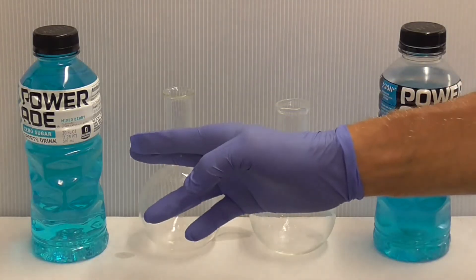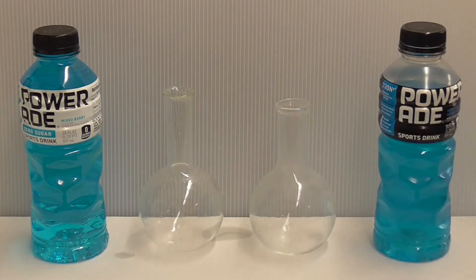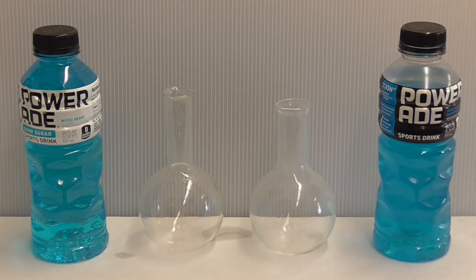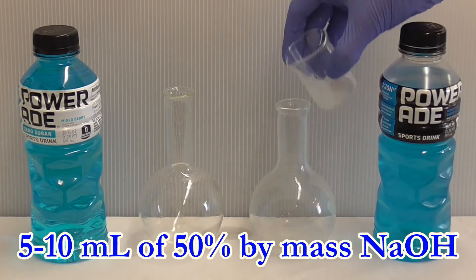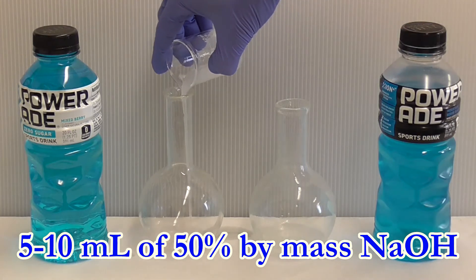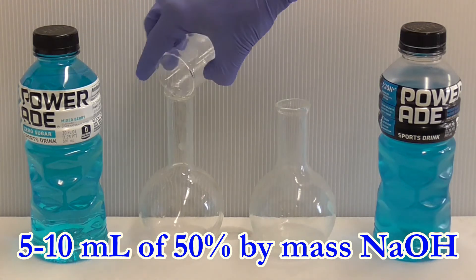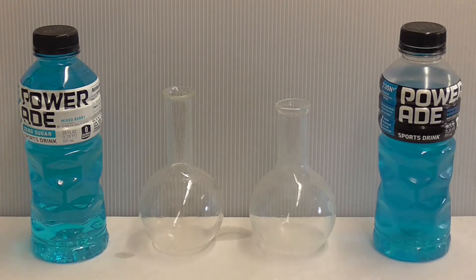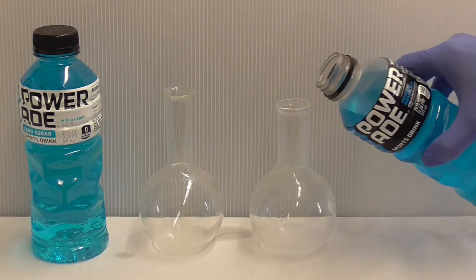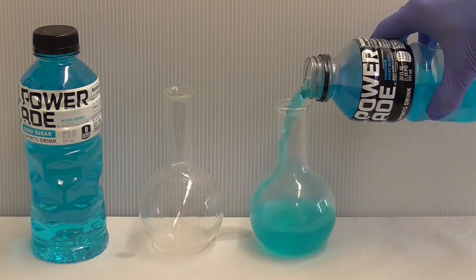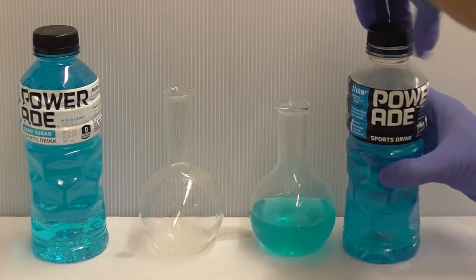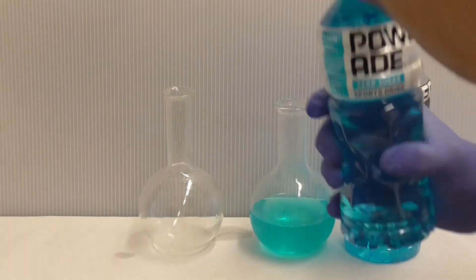You can use sugar-free PowerAid to demonstrate the role that the sugar plays in this experiment. It's real simple. First I'll just pour 5 to 10 mils of 50% sodium hydroxide solution into each flask, and of course into this flask I'll pour the sugared PowerAid and into the other flask I'll pour the sugar-free PowerAid.